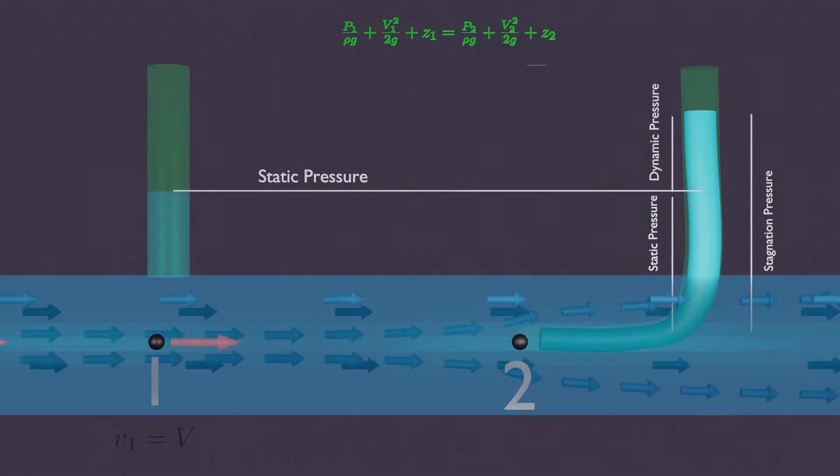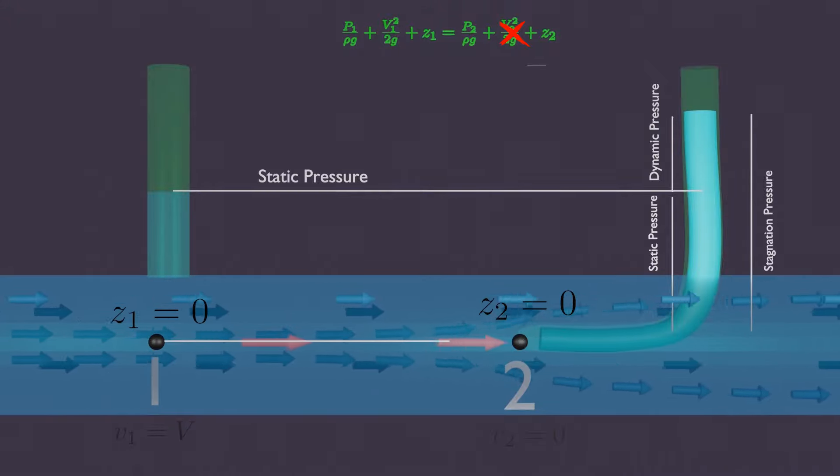Velocity at point 1 is the velocity of flowing water V, whereas velocity of water at the head of PETA tube, that is point 2, is 0. The datum height Z1 and Z2 is 0. Now solving the equation with those values we get.